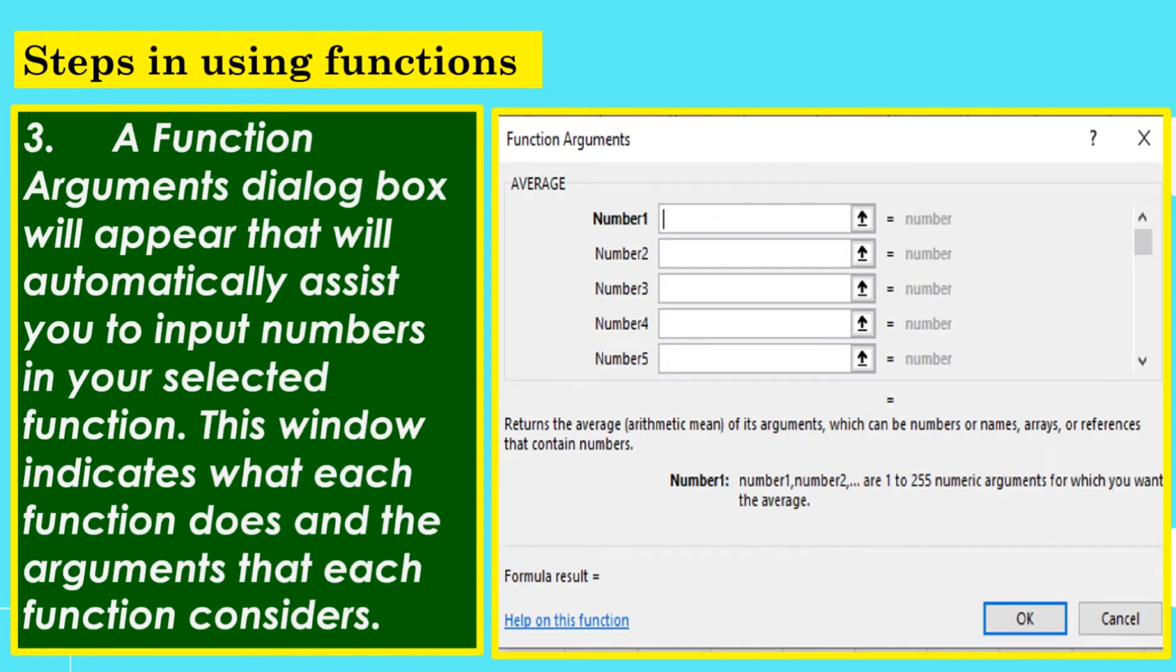A function arguments dialog box will appear that will automatically assist you to input numbers in your selected function. This window indicates what each function does and the arguments that each function considers.